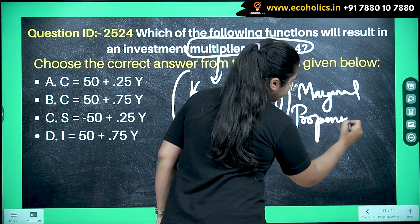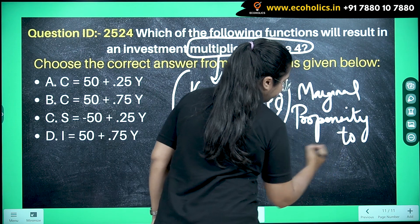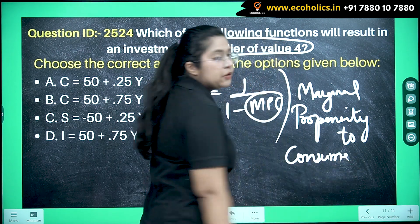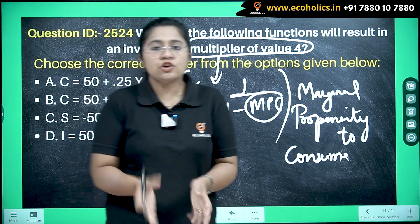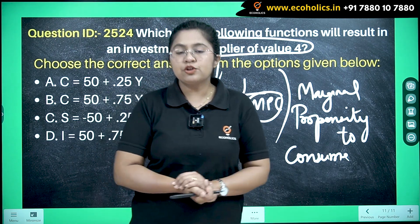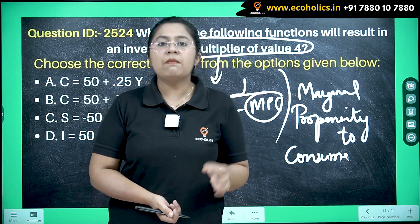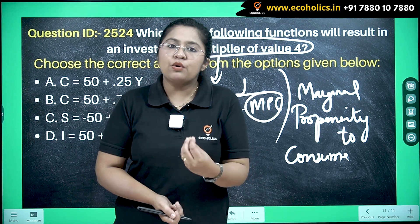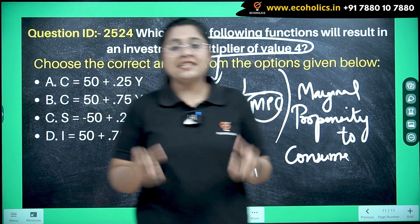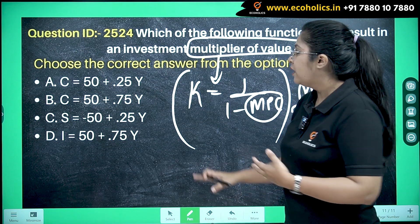— the marginal propensity to consume. The Keynesian concept is very important from the exam point of view, which is why this question will give you full marks if you know a few related things. Let's now look at what options are given and how we solve the question.